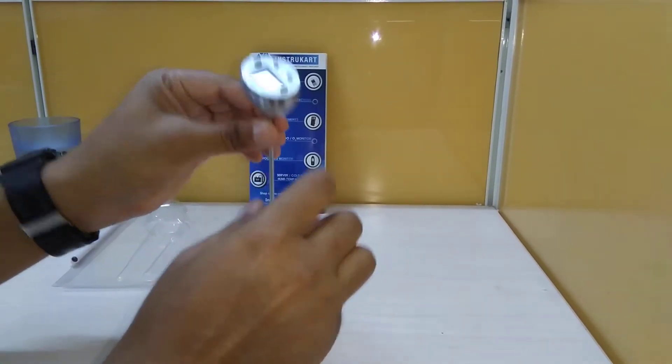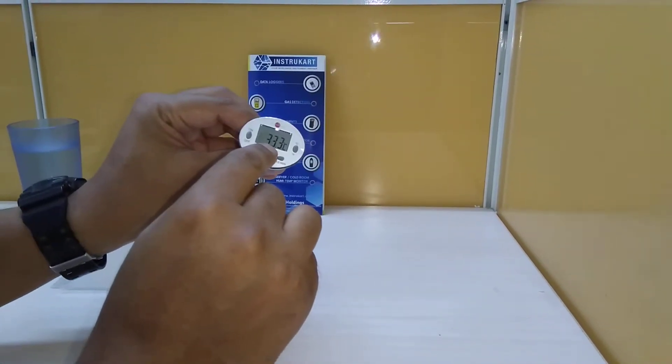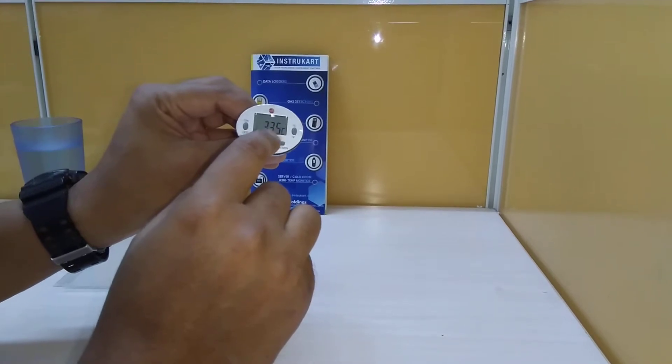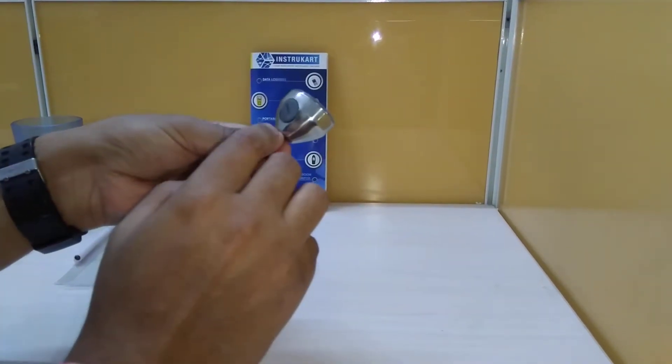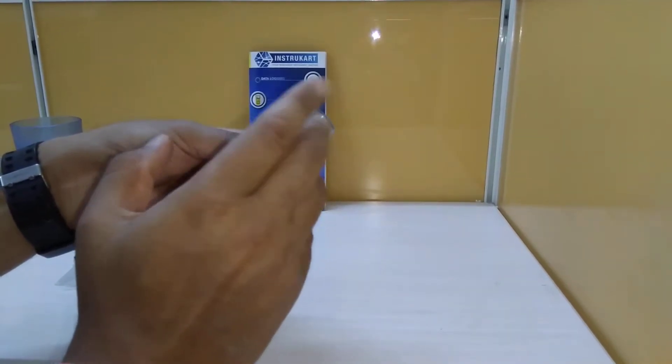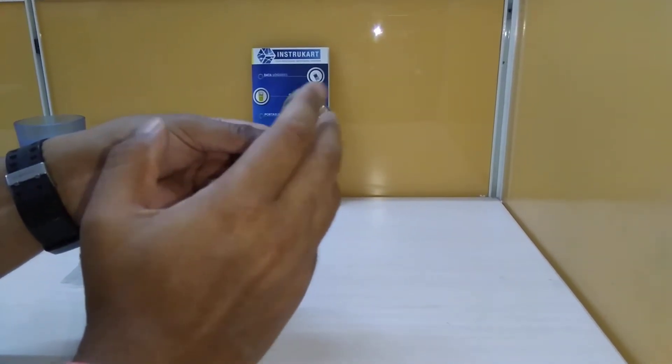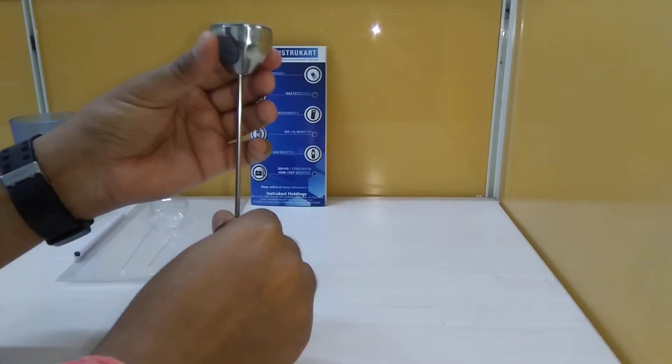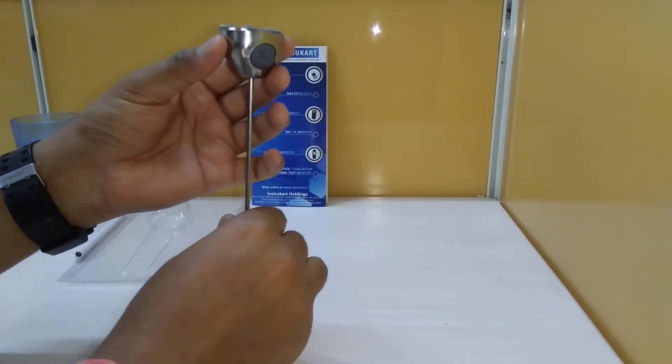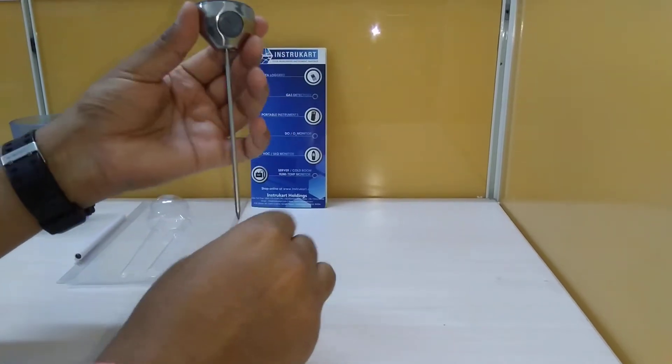It has auto power off if idle for 60 minutes. The battery life is extended to one year if used in regular or normal conditions. It has a protection class of IP67.